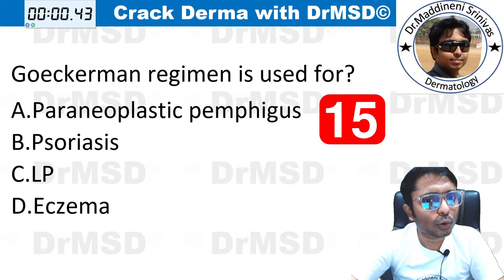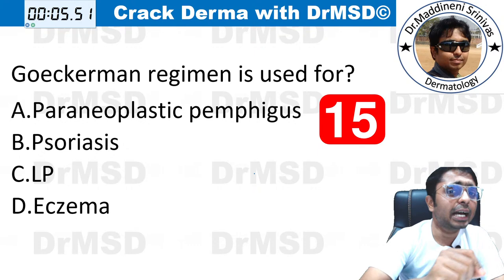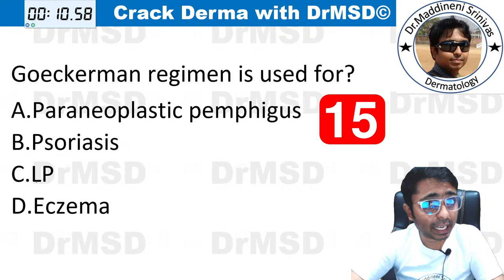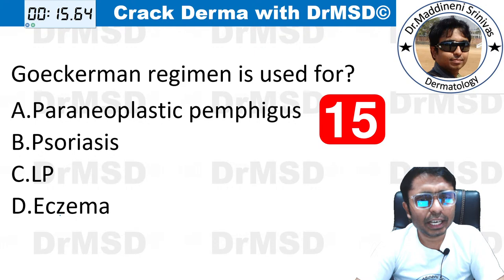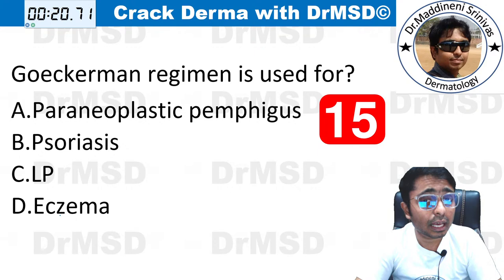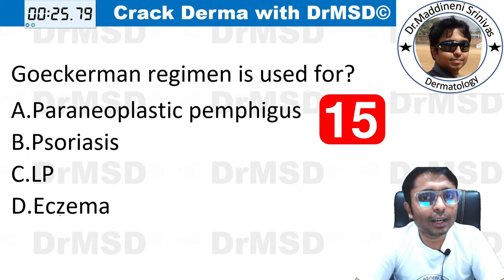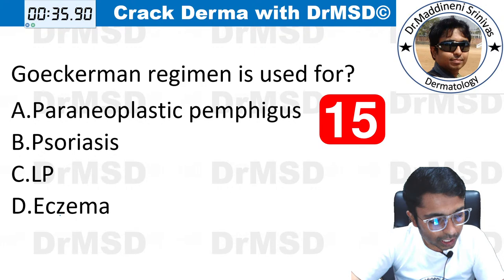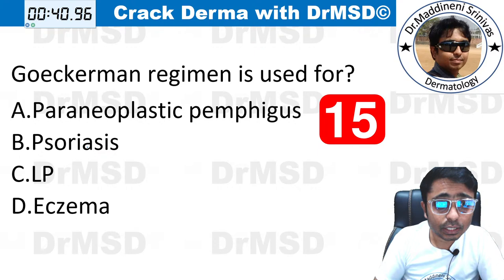Question number 15. Goeckerman regimen is used for which condition — 20 seconds. Options: pityriasis versicolor, psoriasis, lichen planus, or eczema. Since we are discussing a papulosquamous disorder, it should be either psoriasis or lichen planus — 50% chance if guessing. All students marked the correct answer — it is psoriasis. Excellent. You should also know what the regimen consists of, which we will see in the explanation.